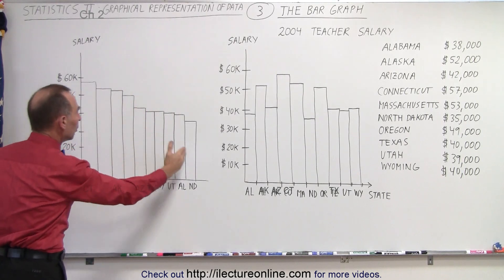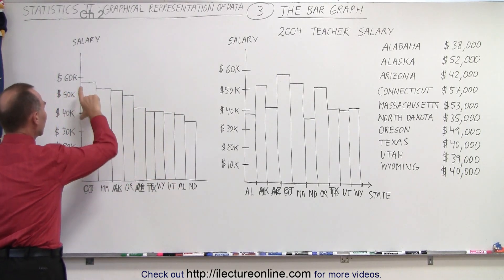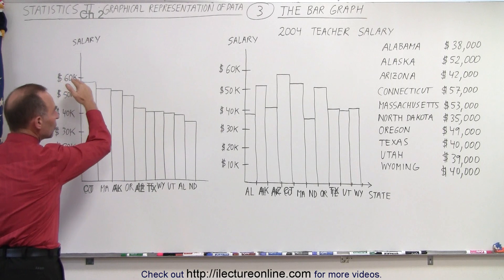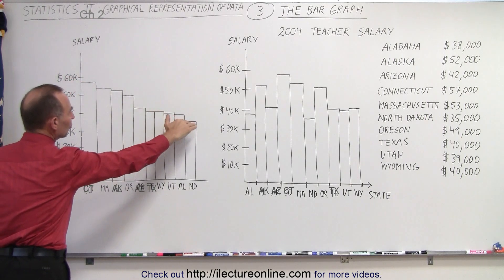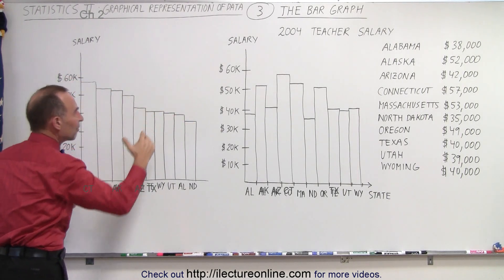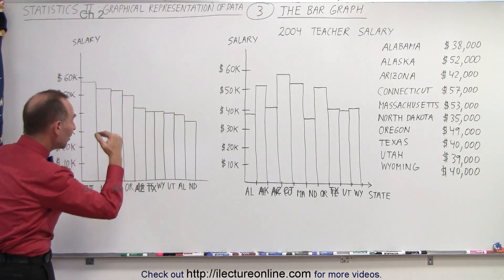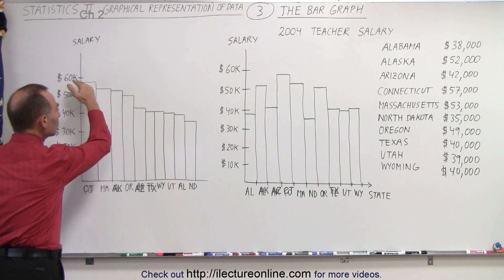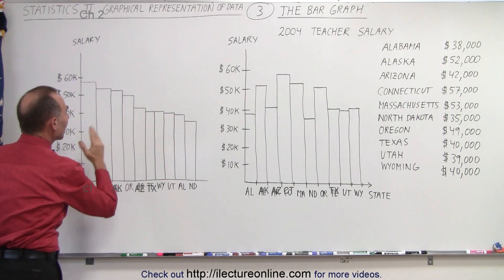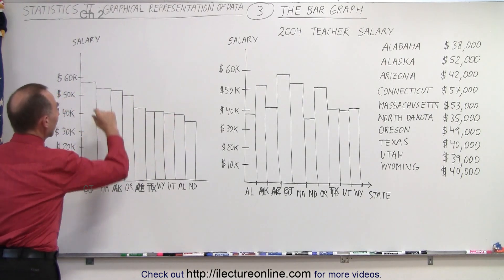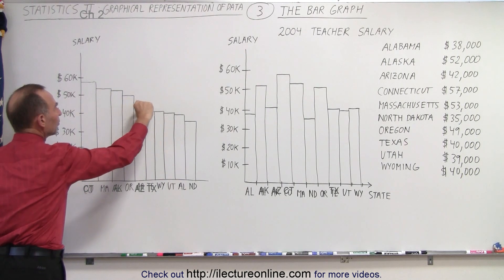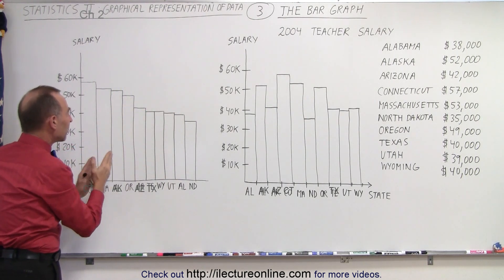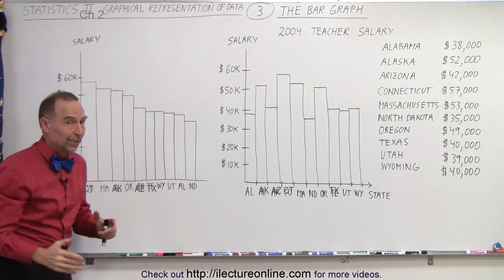So if you do it in a sequential order where you put the greatest salary first and the smallest salary last, you could then have a much easier time of seeing right away what the differences are in the earnings for teachers in those 10 states, the way you have it lined up. And you can kind of see the relative differences by setting them side by side in descending order.